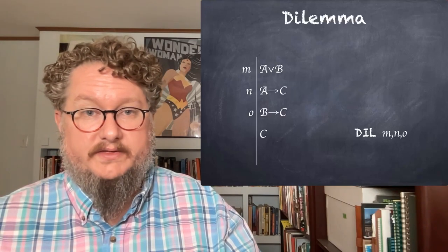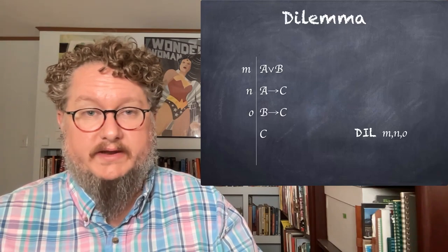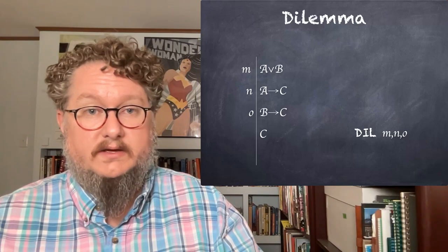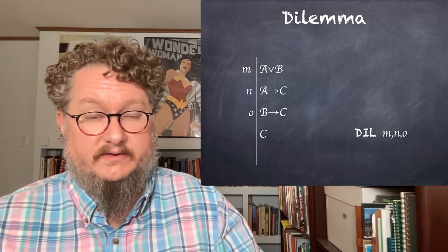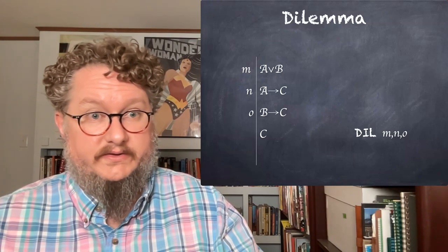One example is the dilemma rule. The dilemma rule shows that if we have three lines, the disjunction A or B and the conditional if A then C and if B then C, then we can derive the conclusion C.